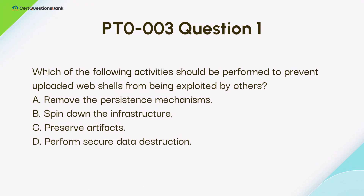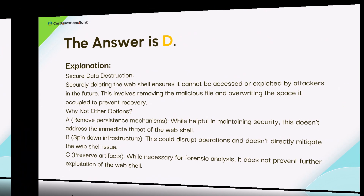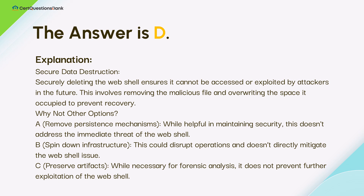Which of the following activities should be performed to prevent uploaded web shells from being exploited by others? A. Remove the persistence mechanisms. B. Spin down the infrastructure. C. Preserve artifacts. D. Perform secure data destruction. The answer is D, secure data destruction. Securely deleting the web shell ensures it cannot be accessed or exploited by attackers in the future. This involves removing the malicious file and overriding the space it occupied to prevent recovery.